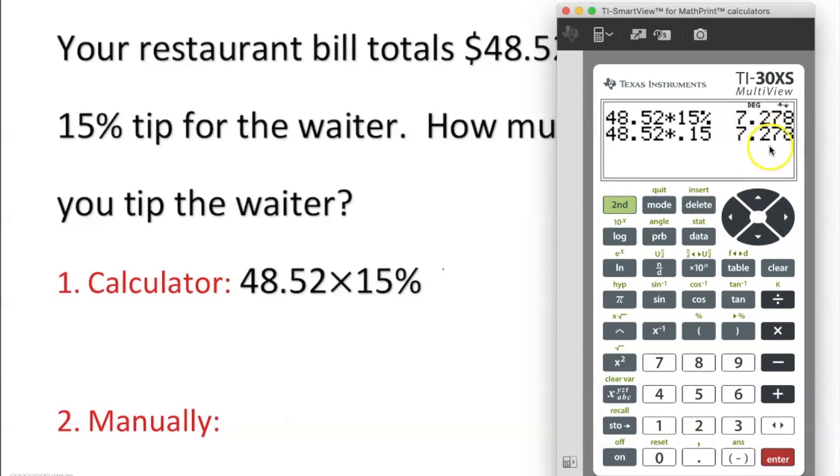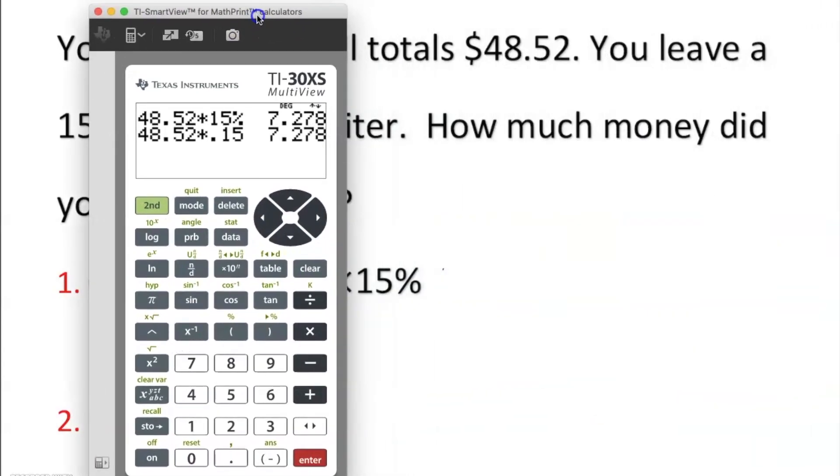We can round things up. If we round things up, it's going to be approximately - so it should give us approximately $7.28.